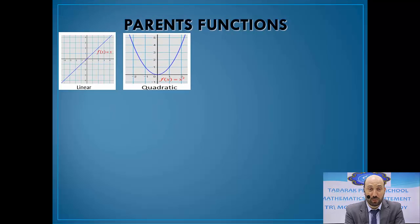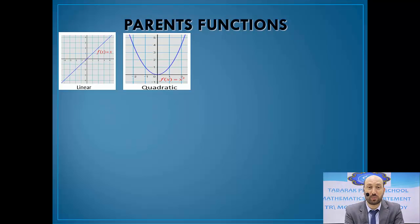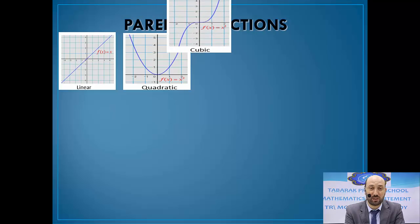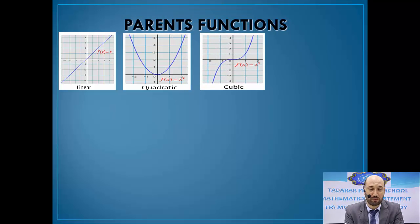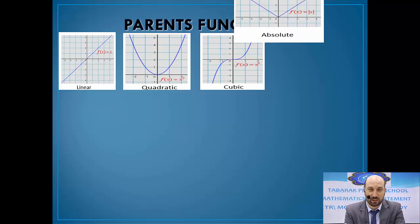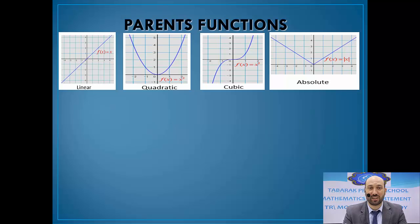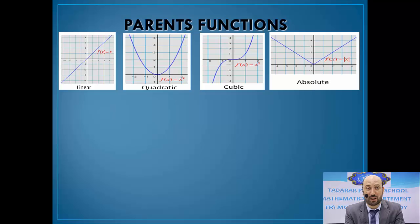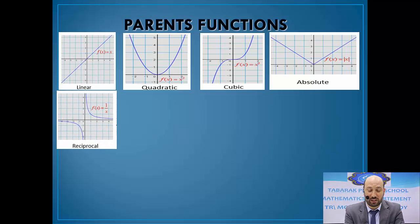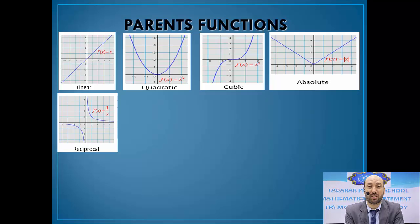For the quadratic functions, we studied these in grade 10 and grade 11 in the first semester — how to graph quadratic functions where f(x) = x². For the cubic functions where f(x) = x³, it takes a characteristic S-shaped curve. For the absolute value, where f(x) = |x|, it will be two straight lines — one going upward to the right and the second upward to the left. For the reciprocal functions, f(x) = 1/x, we get two separated parabolic curves.